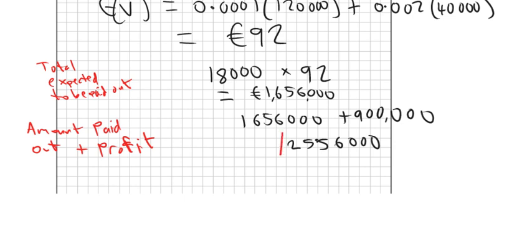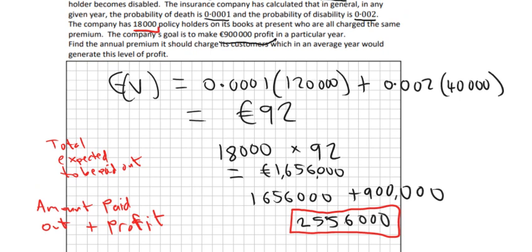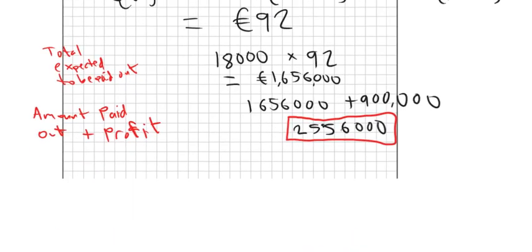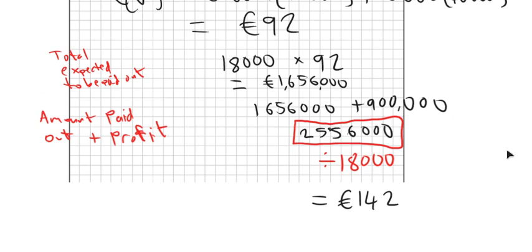That total — 2,556,000 — is the amount they need to generate each year, covering both expected payouts and the desired profit. If you divide that by the 18,000 policyholders, that tells you how much they need from each policyholder. So 2,556,000 divided by 18,000 gives 142 euro. So each policyholder needs to pay 142 euro, and that's the answer for the last part of the question.